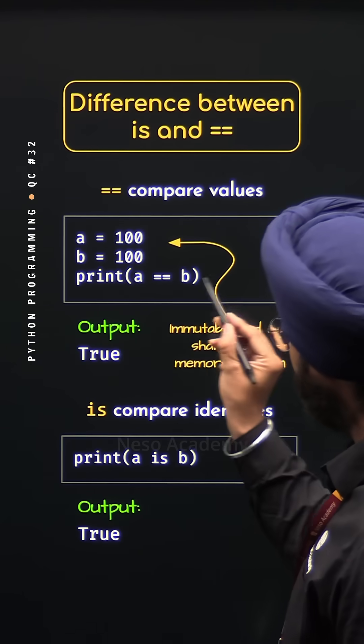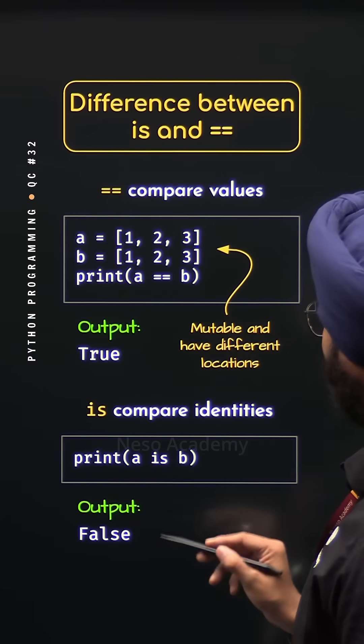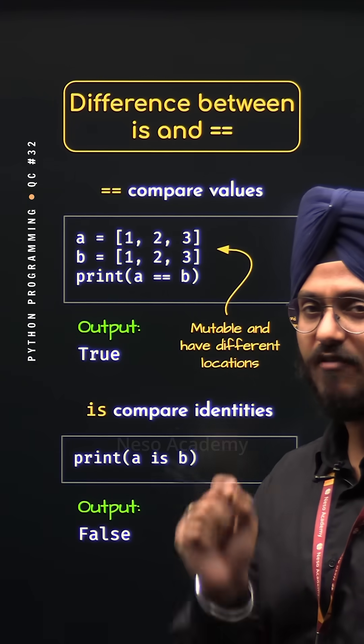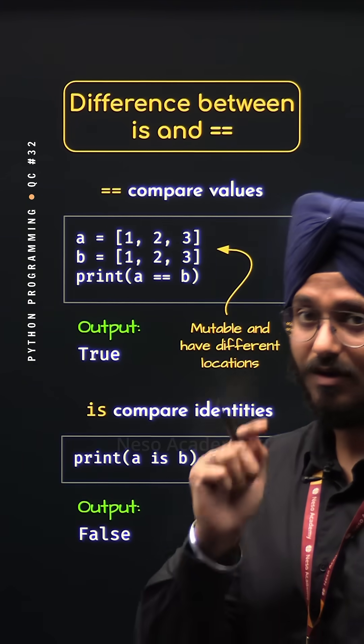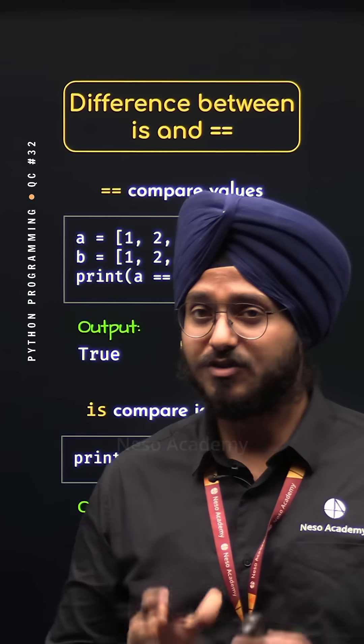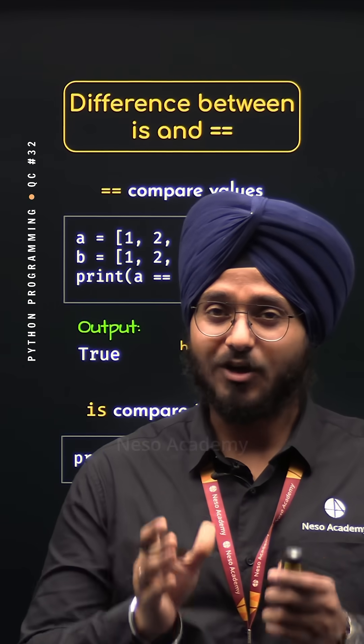But this is not the case with lists. Lists are mutable and hence, they must have different memory locations. Because modifying one list should not modify the other list. So, with this we have understood the difference between the is operator and the equality operator.